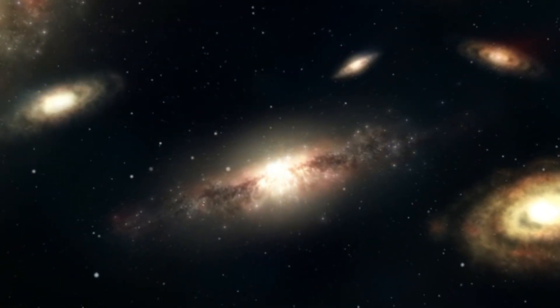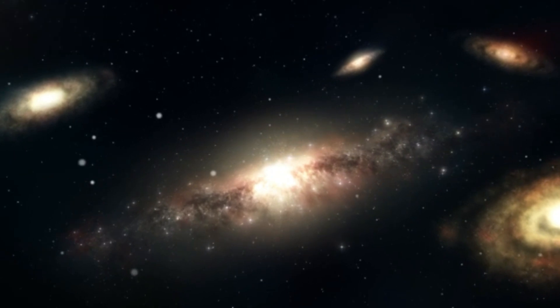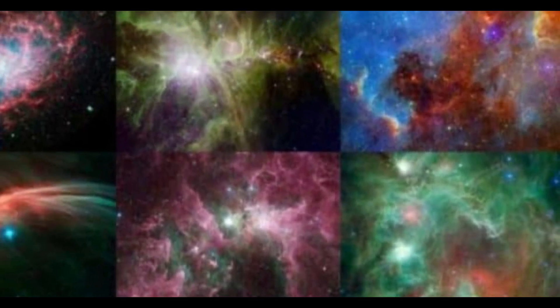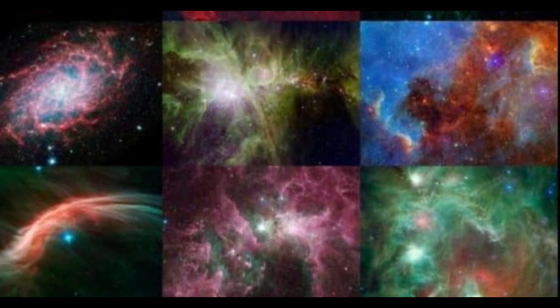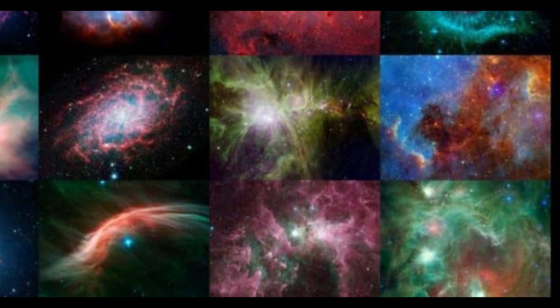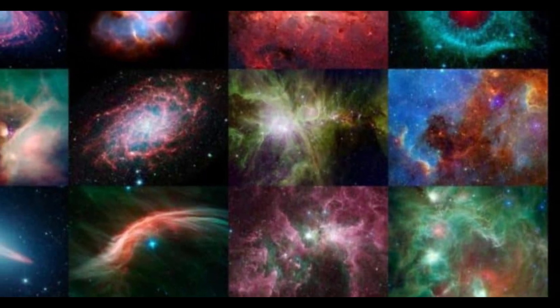Hubble Space Telescope has photographed many such lumps, which may be the precursors to modern galaxies. According to this theory, most of the early large galaxies were spirals. But over time, many spirals merged to form ellipticals.